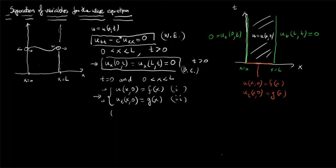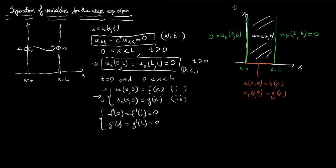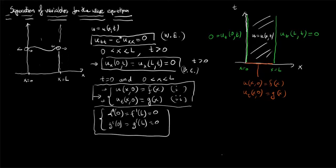Namely, taking the x-derivative of the initial conditions and evaluating at the endpoints, we must have f prime at 0 equals f prime at L equals 0, and likewise g prime at 0 equals g prime at L equals 0. This is the full system of conditions that our solution for the amplitude of the string must satisfy.